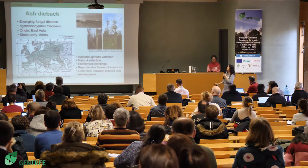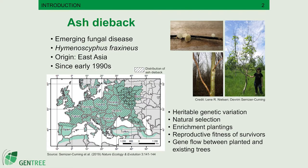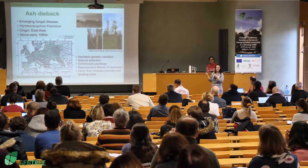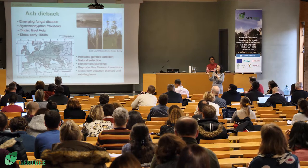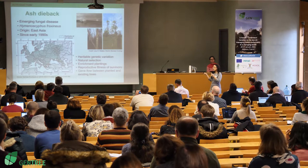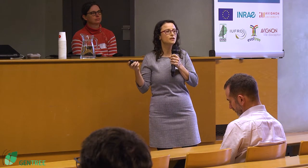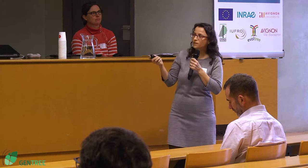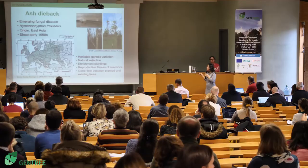Perhaps not to dwell on how common ash dieback is — this emerging fungal disease has almost infected all ash trees throughout their range of distribution. It originated from Asia and has been spreading since the 1990s. The good news is there are many studies showing heritable genetic variation in disease susceptibility, which is a potential for the species to recover in the long run through natural selection. But because tolerant trees are really low in frequency in nature, the question is whether we can support the process through enrichment plantings with tested, tolerant material.